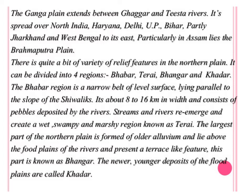According to relief features, the North Plain can also be divided into four major parts: first Bhabar, second Tarai, third Bhangar, and fourth Khadar. The Bhabar region lies parallel to the Shivalik, which is the lowermost range of the Himalayas. After the Shivalik, the North Plain starts, and the uppermost part is known as the Bhabar region. The Bhabar region has a width of 8 to 16 kilometers and has a large amount of pebbles deposited by rivers.